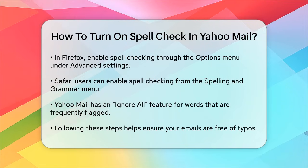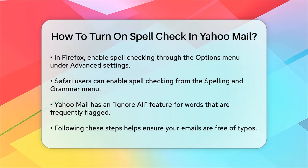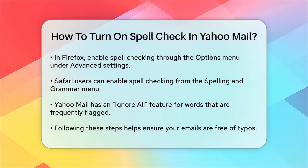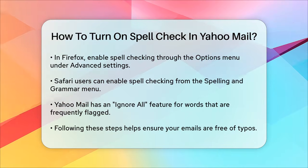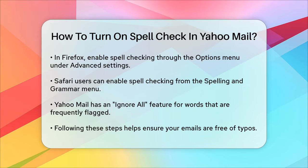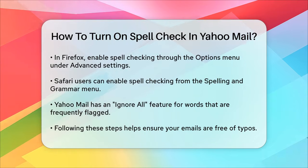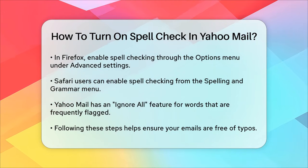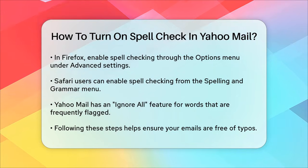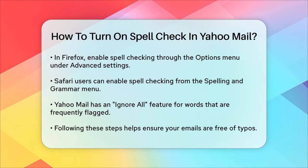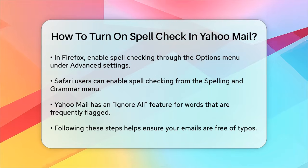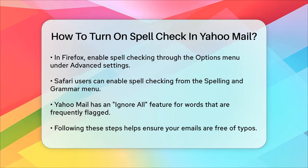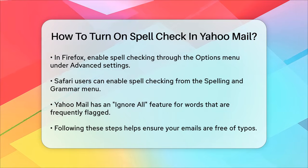If you find that certain words like names or specific terms are constantly flagged as misspelt, Yahoo Mail's spellcheck has an 'Ignore All' feature. This allows you to ignore all occurrences of a particular word, making the spellcheck process smoother. In summary, while Yahoo Mail doesn't offer real-time spellchecking, you can use its built-in spellcheck feature or your browser's spellchecker to ensure your emails are error-free. By following these steps, you'll be able to catch those pesky typos and send more polished emails.